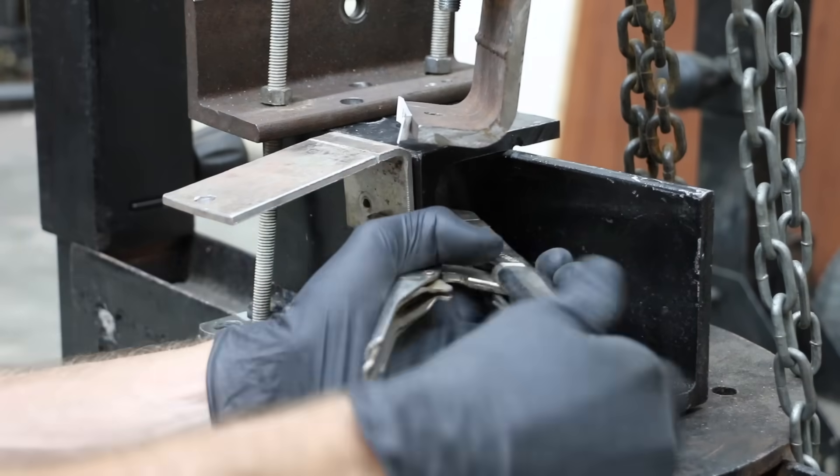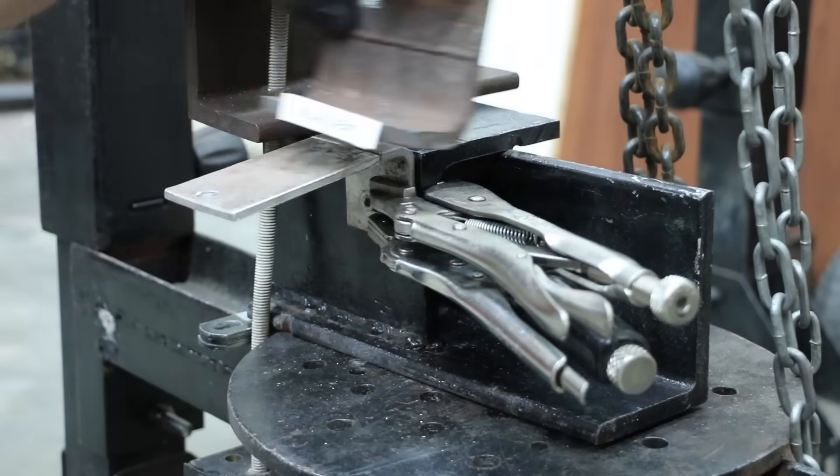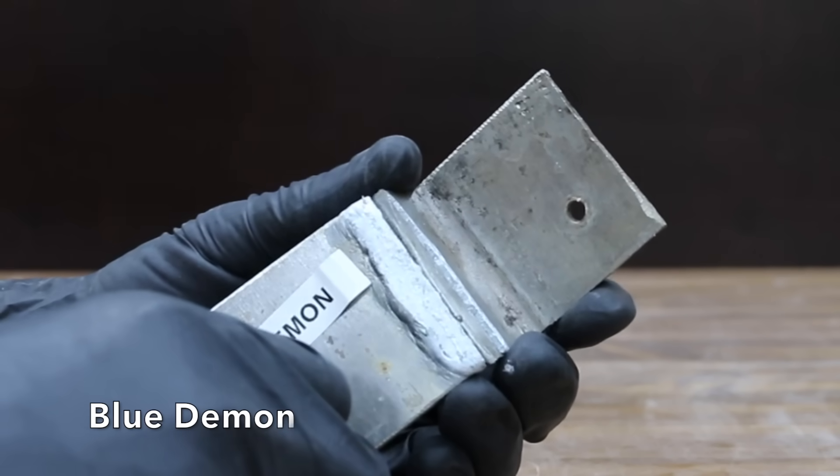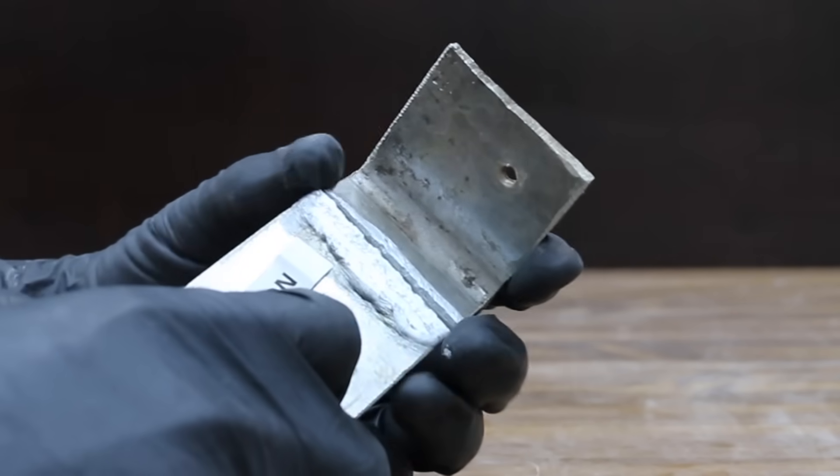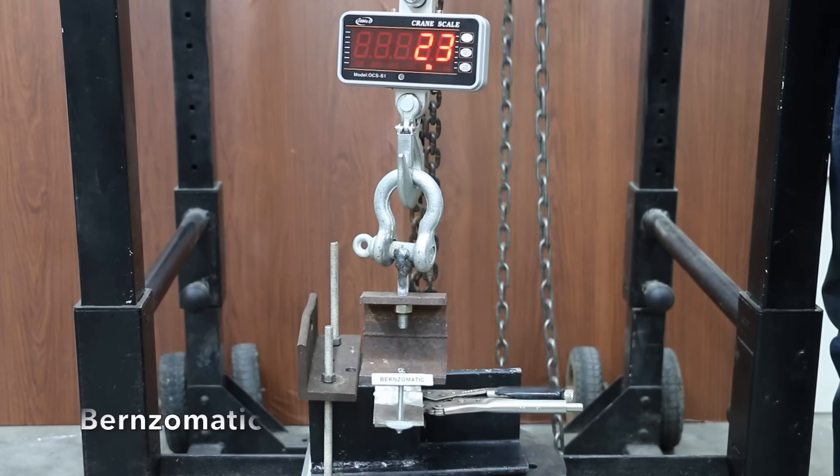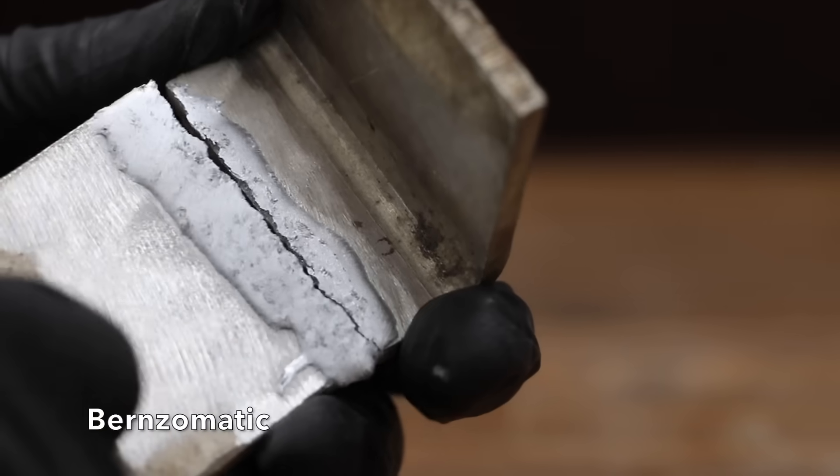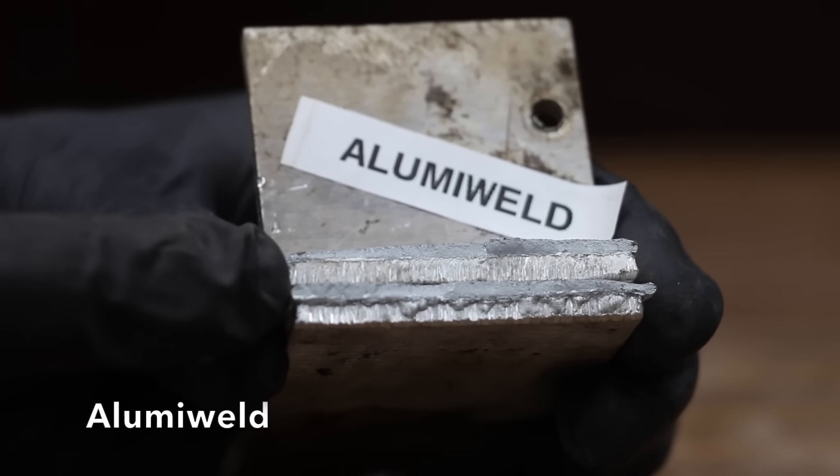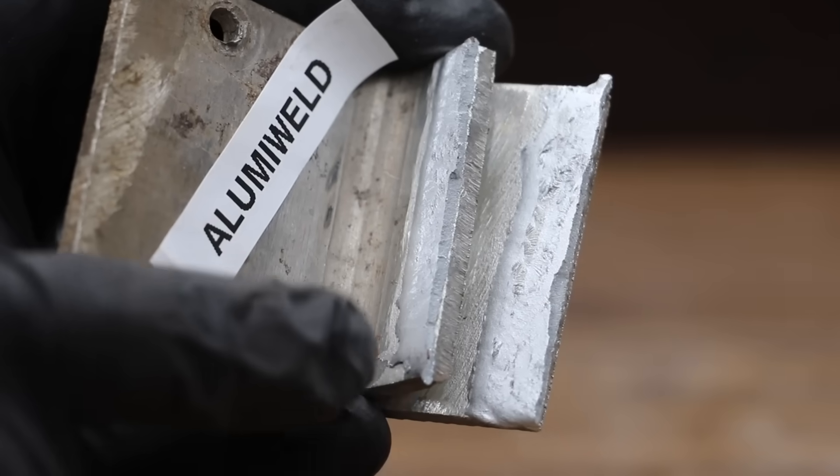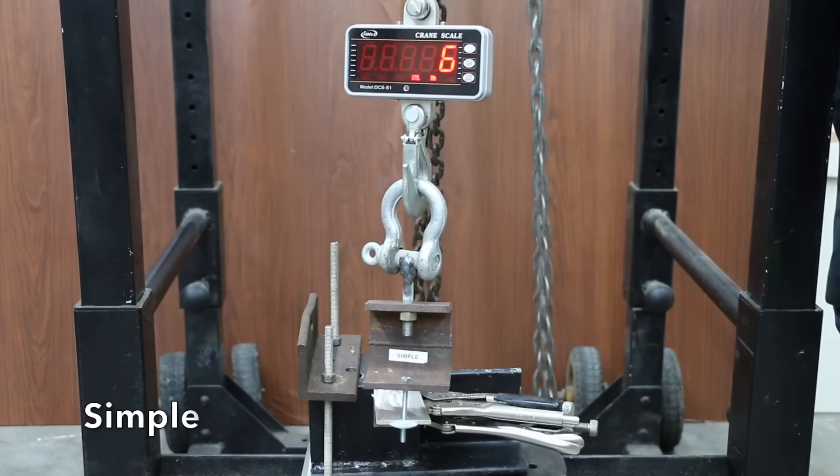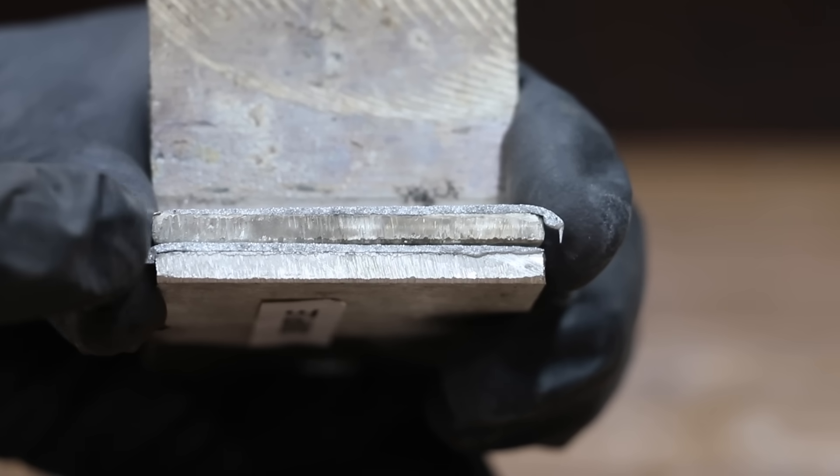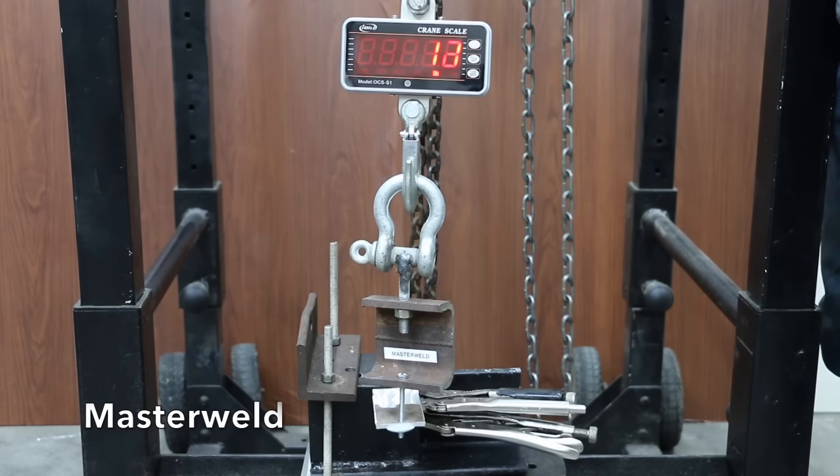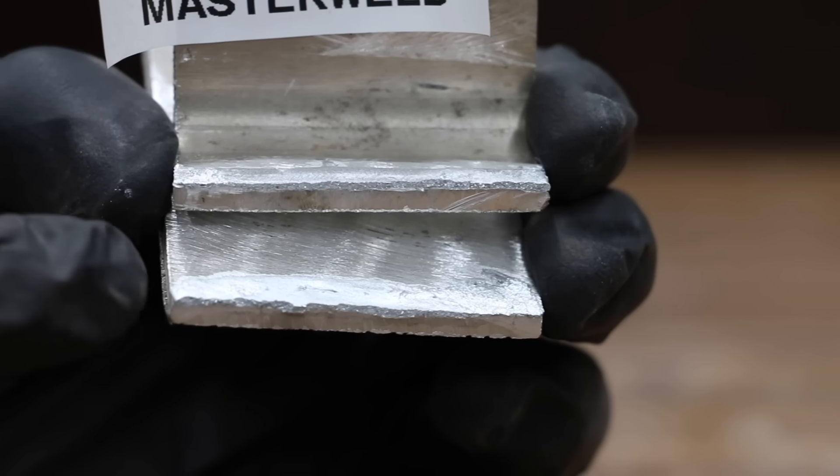The purpose of this next test is to see if the weld peels away from the aluminum or if the weld breaks. I'll use vice grips to hold the test piece in position. The Blue Demon weld broke instead of peeling away, which is exactly what we want. The Burnz-O-Matic weld broke instead of peeling, so great job by the Burnz-O-Matic brand. Just like Burnz-O-Matic, AlumaWeld did a great job with the weld breaking instead of peeling. The simple weld wasn't as thick as some of the other brands, so it didn't take as much weight before failing. The weld did a great job sticking to the aluminum. MasterWeld also performed well in this test with the weld breaking instead of peeling.